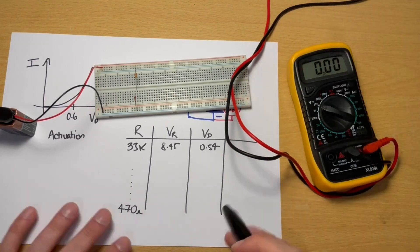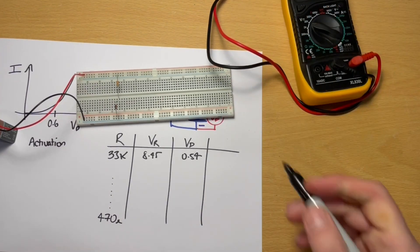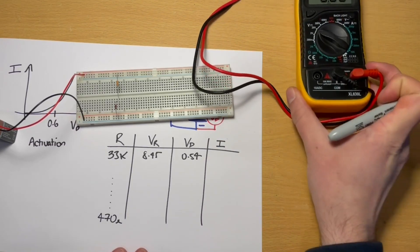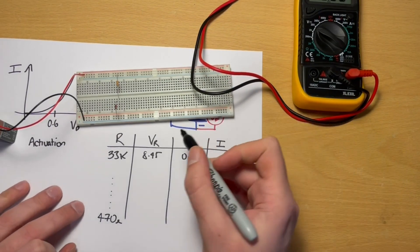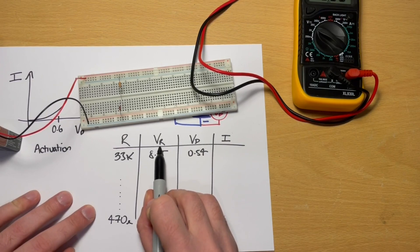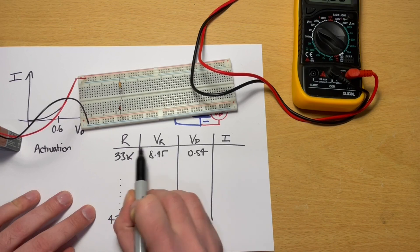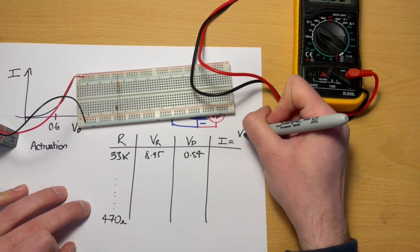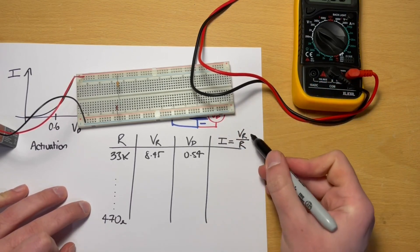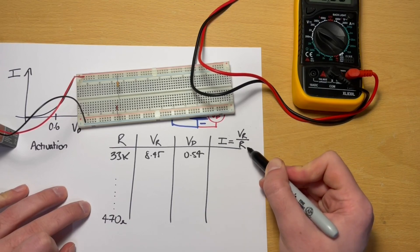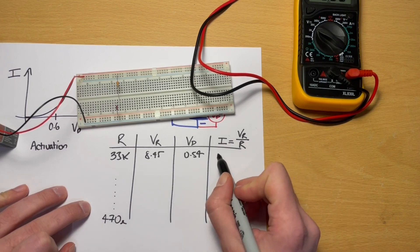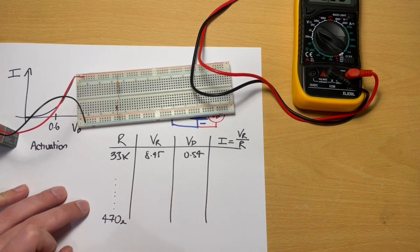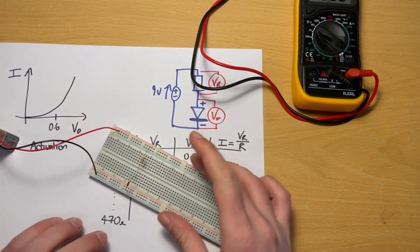That last blank column is for the current (I). I don't need to measure current directly because I know the voltage across the resistor and the resistance value. Using Ohm's law — current equals VR divided by R — I can calculate the current. I'll do those calculations later rather than now.